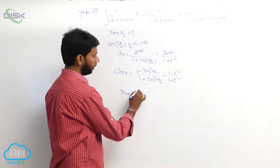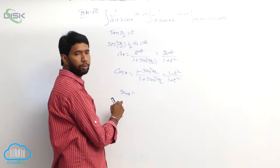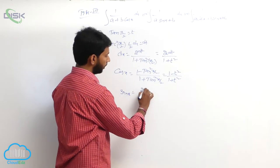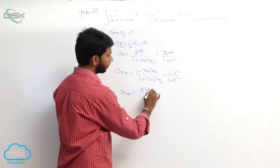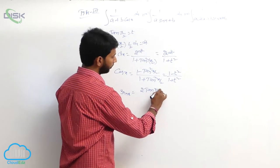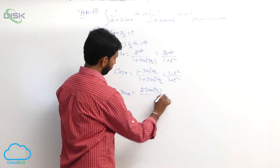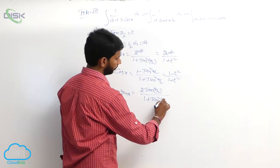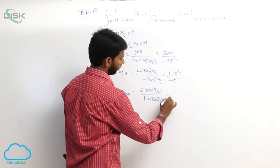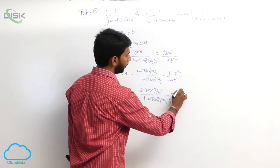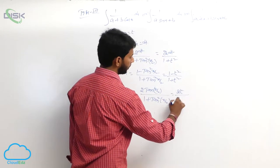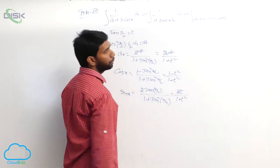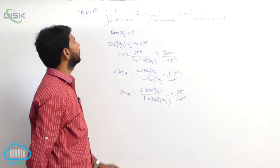Similarly, sin x equals 2 tan(x/2) by (1 plus tan square(x/2)), that is, 2t by (1 plus t square).